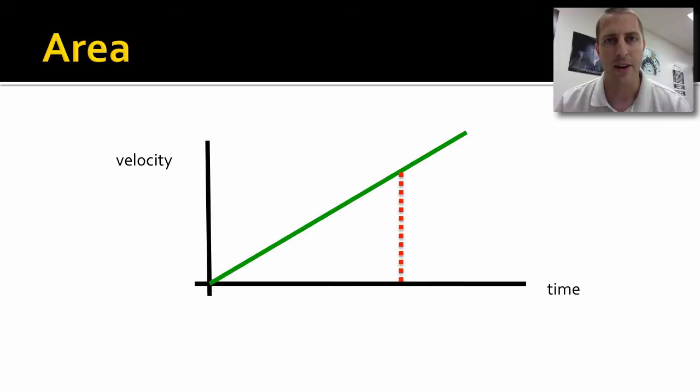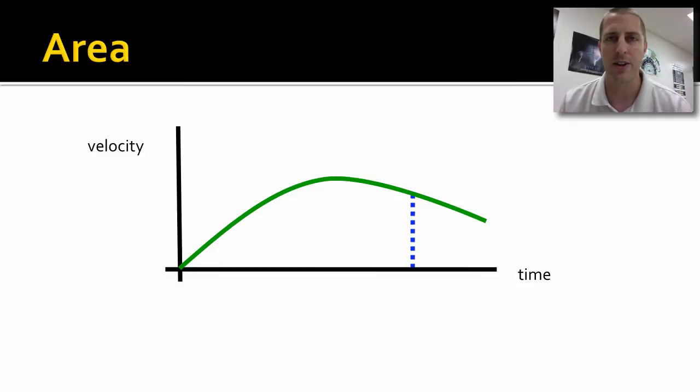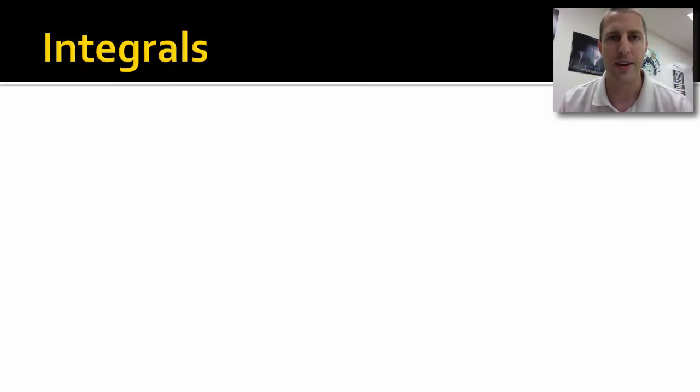Now finding the area under the graph that's a straight line is pretty easy. Find a triangle. We know the area of a triangle. We took geometry. Easy. But what if we have a curve and we want to find the area under the curve? That's harder. That's where integrals come in.